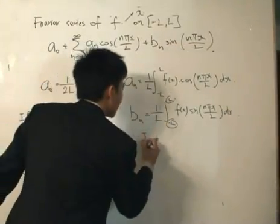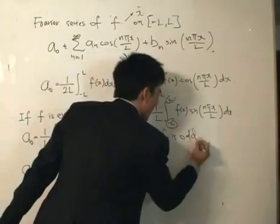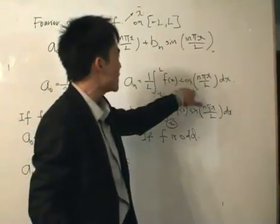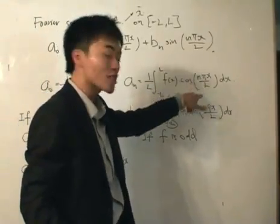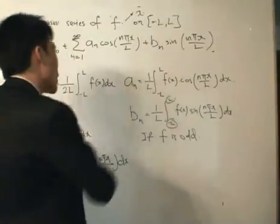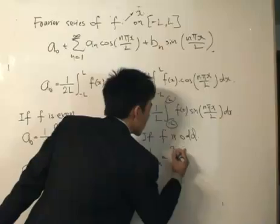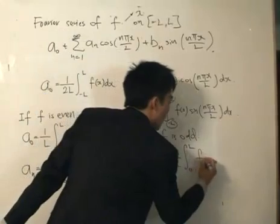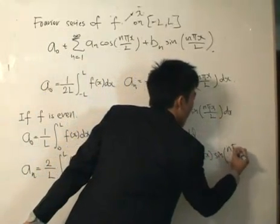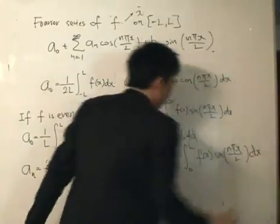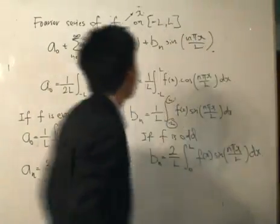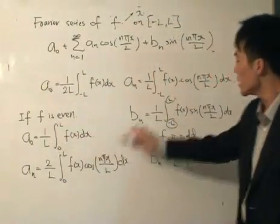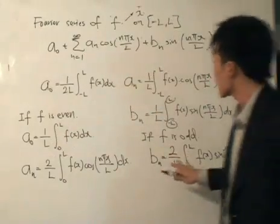If f is odd, things get even better. Integrating an odd function from minus L to L equals zero, so a naught equals zero. Odd times even gives an odd function, so the an terms vanish too. All we are left with is bn equals 2 over L times the integral from 0 to L of f(x) sine(n pi x / L) dx, since odd times odd is even. So if f is odd, we only need to find bn.